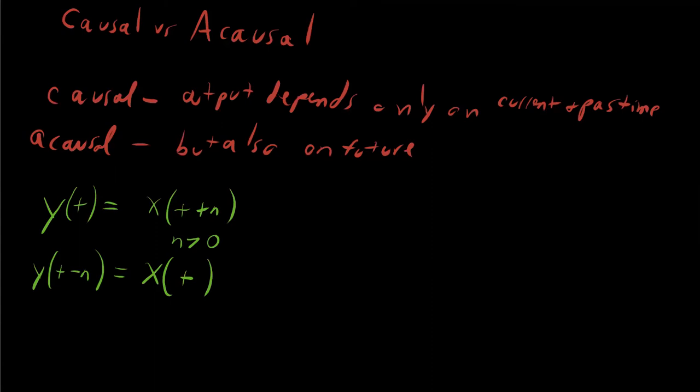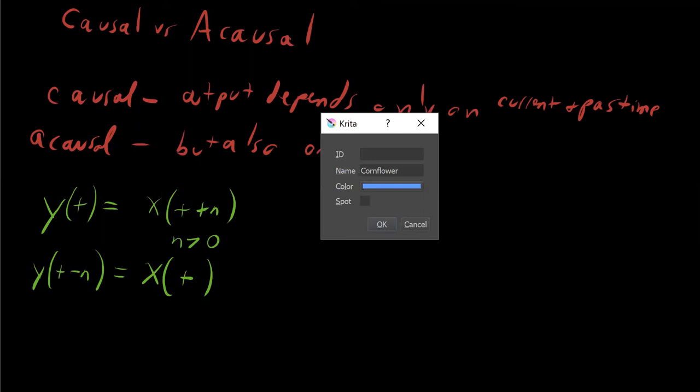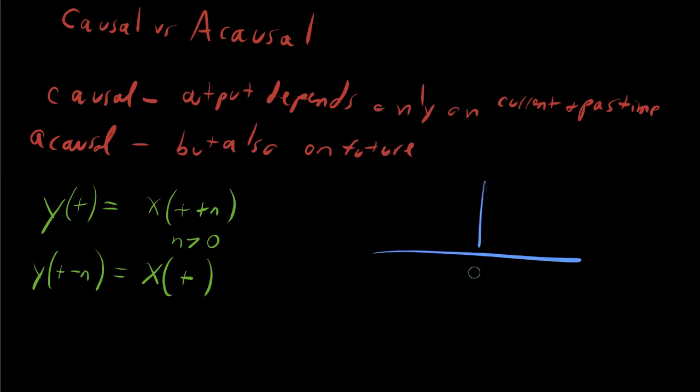If we were to draw out the transfer function of this, it's actually quite straightforward. So let's say that this is time T equals zero. This is time over here. We're on that time axis.